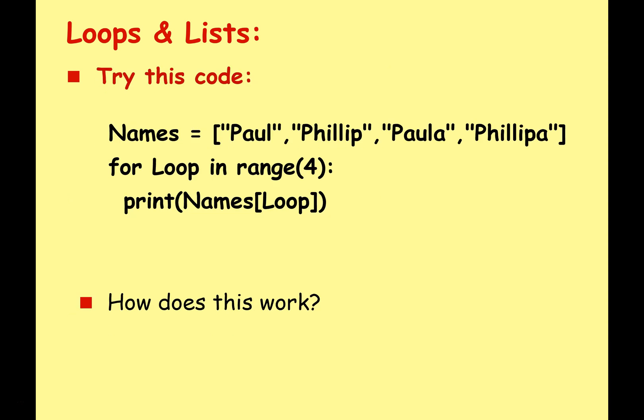Clearly there's an easier way to do this and we're going to do that using for loops. This code will do the same as the code on the previous slide but it's a lot simpler and more efficient. We create our list of names and then we use the for loop to iterate through each element in the list: for loop in range four, then print names loop. We're creating a counter variable that will keep track of how many times we're looping - four times in total.